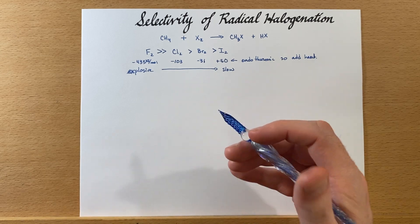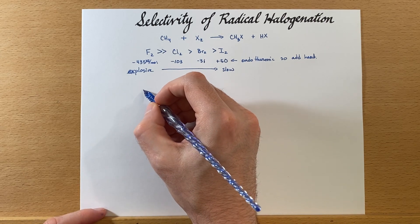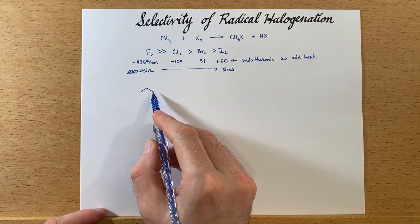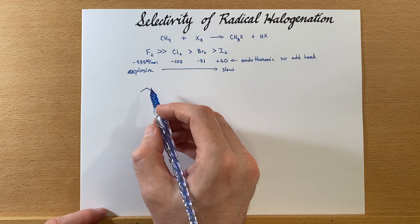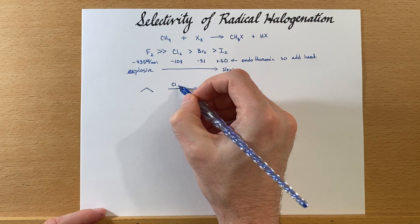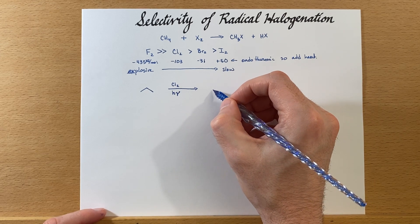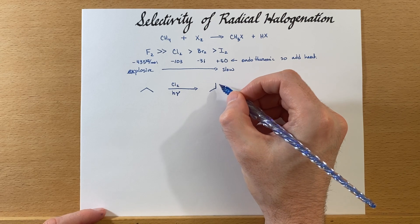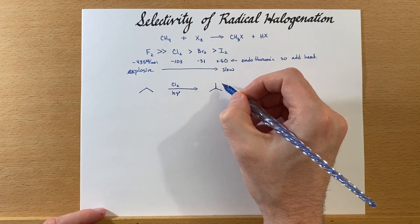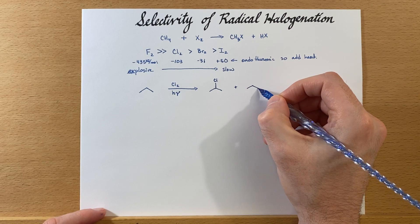Now let's look at how this affects the selectivity of the halogenation. If we start with propane, we're using that because it really just has two options: we can go secondary substitution or primary substitution. We're going to compare chlorine to bromine. We'll have the same conditions with UV light, and we're going to get two products out. As you would suspect, the more stable radical from the secondary position is the major product, and we will also generate some minor product.